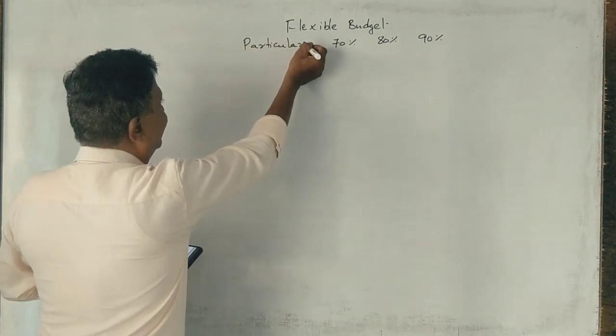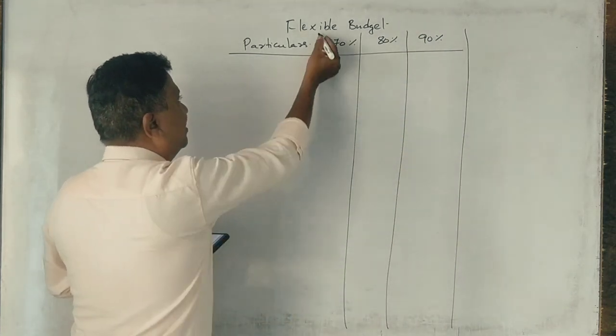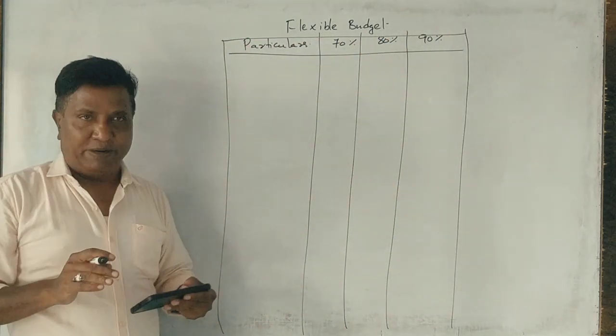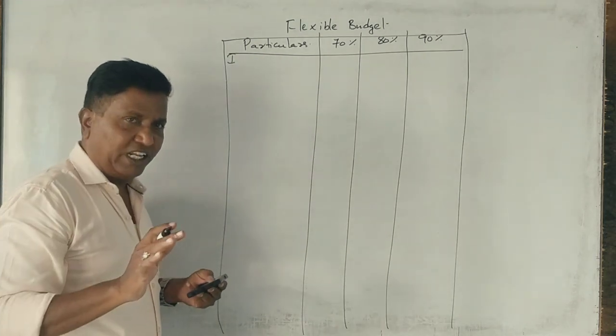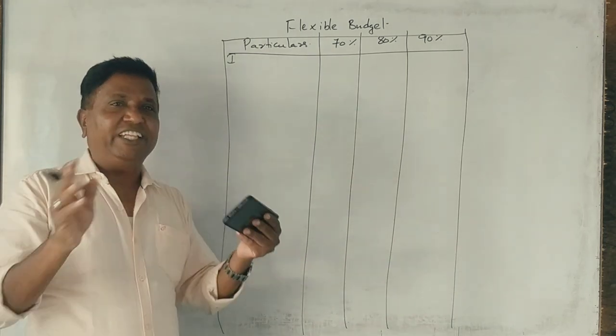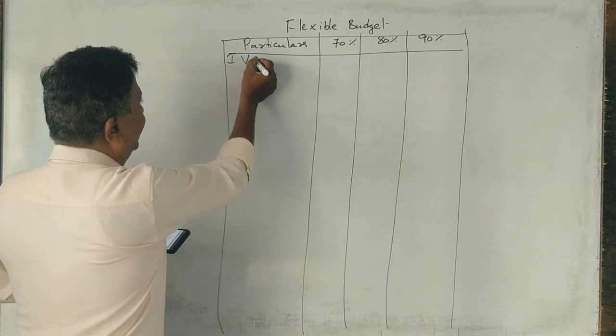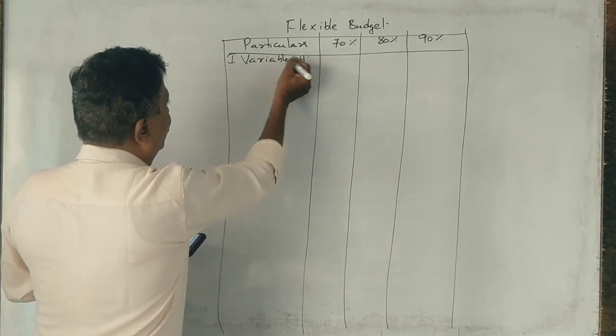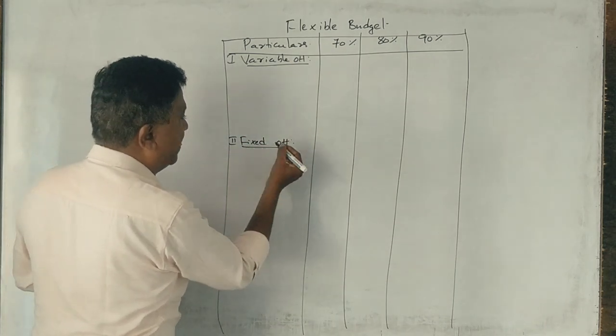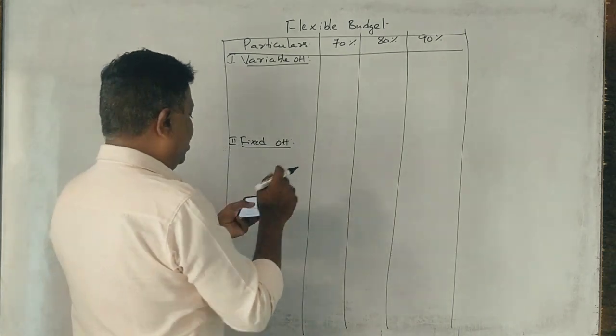In this information, we need flexible budget to prepare flexible budget at 70% capacity, 80% capacity, and 90% capacity. This is a particular reason. Now look, this is flexible budget and the problem is forming. We have three expenses: one variable, another semi-variable, another fixed.